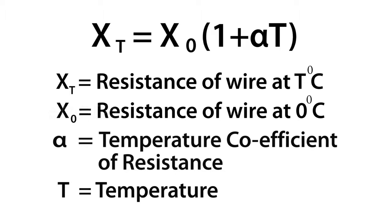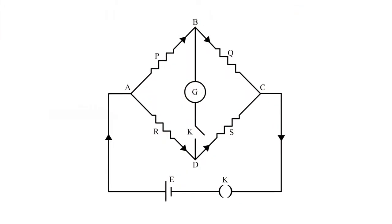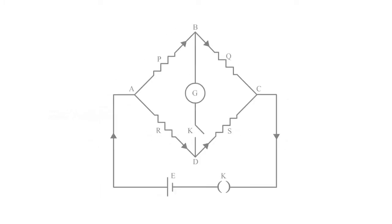Apparatus: The Carry Foster bridge. It is an electrical circuit that can be used to measure very small resistance. It works on the same principle as Wheatstone bridge, which consists of four resistances P, Q, R, and S.